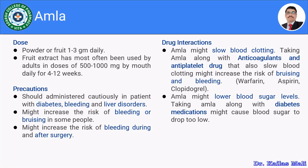The second drug interaction is related to antidiabetic medications. Since Amla reduces blood sugar levels and antidiabetic medications also reduce blood sugar levels, combining Amla with antidiabetic medication can lead to hypoglycemia — excessively lowered blood sugar levels — which may lead to dizziness and many other complications. Therefore, one should not combine Amla with antidiabetic medication. These are the two important drug interactions of Amla.